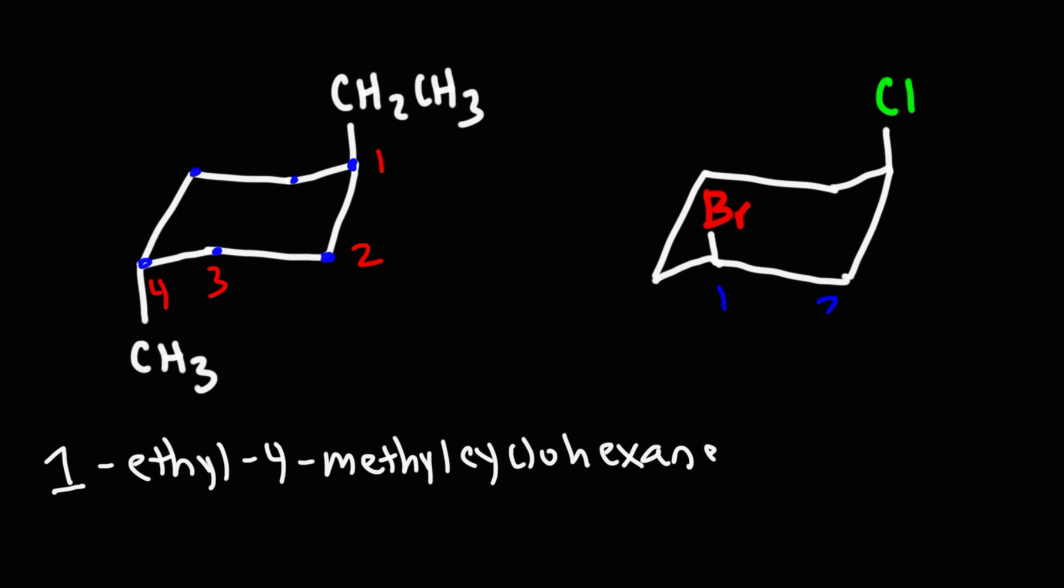So it's better to count it this way. So we have a bromine on carbon 1, 1-bromo, a chlorine on carbon 3, so 3-chloro, and then cyclohexane. So that's how we can name this particular compound.